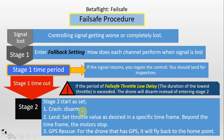There are three options for Stage 2. The first one is 'drop,' which simply disarms the quad. The second one is 'land,' but it is NOT an auto-land function — I repeat, it is not an auto-land function. The third one is GPS rescue, which is for quadcopters that have GPS installed.